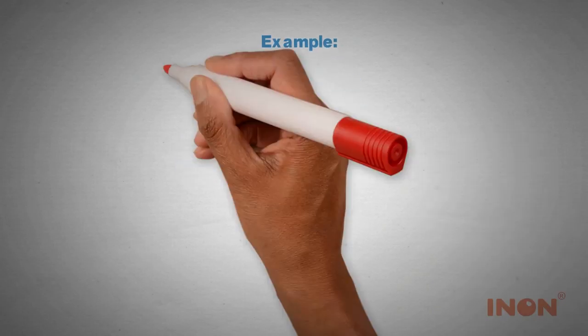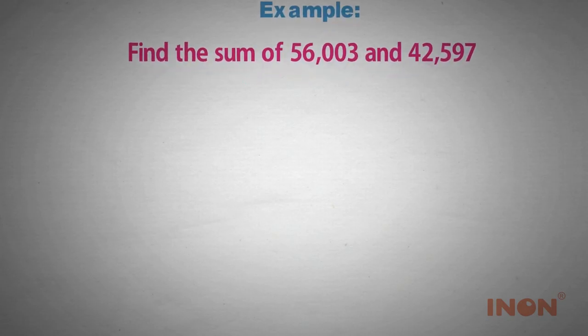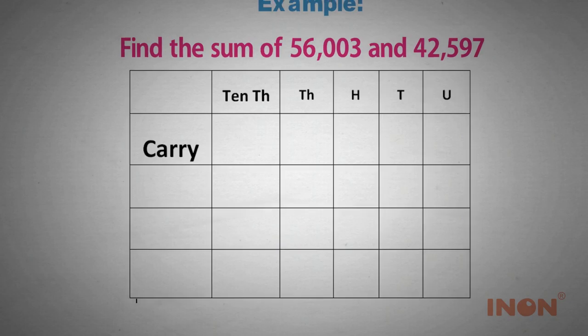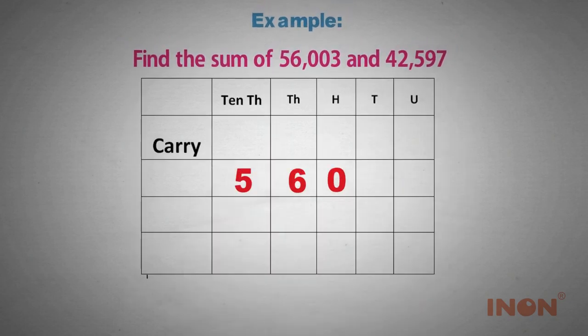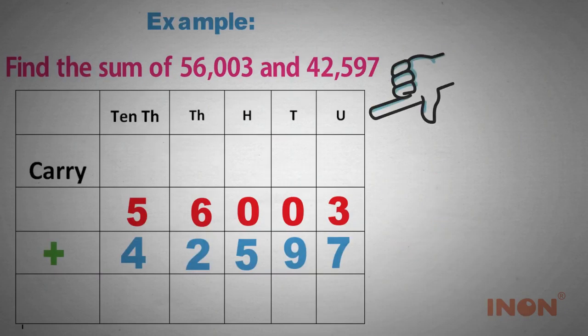Example: Find the sum of 56,003 and 42,597. Arrange both numbers in the place value chart. That is 56,003 plus 42,597. In the units place,